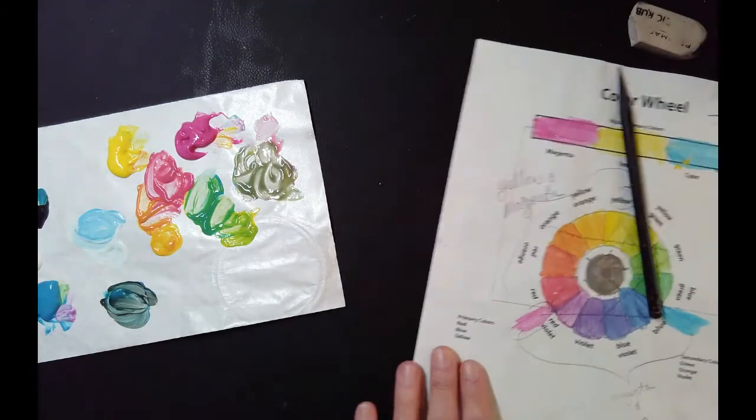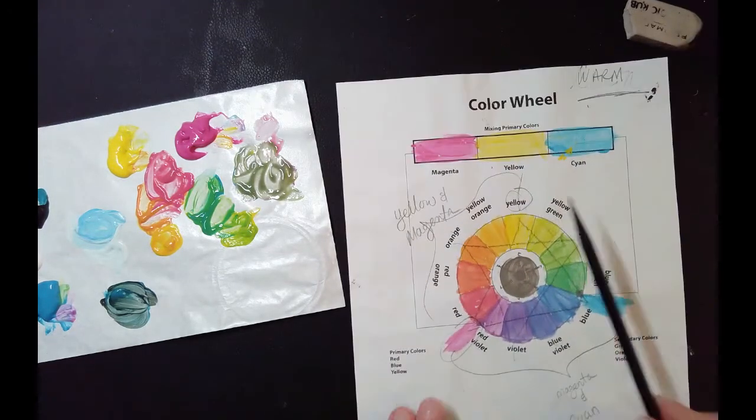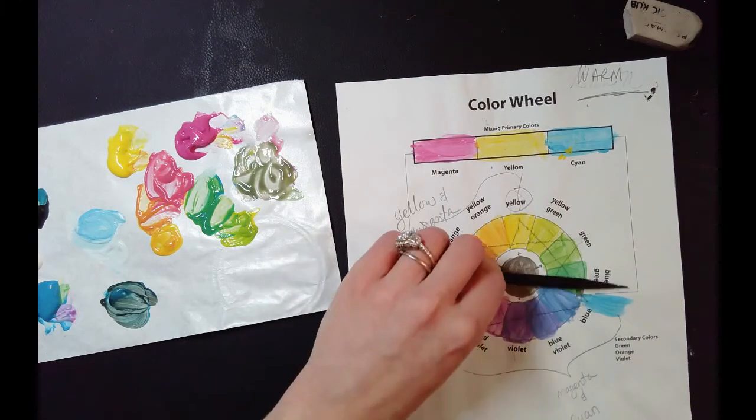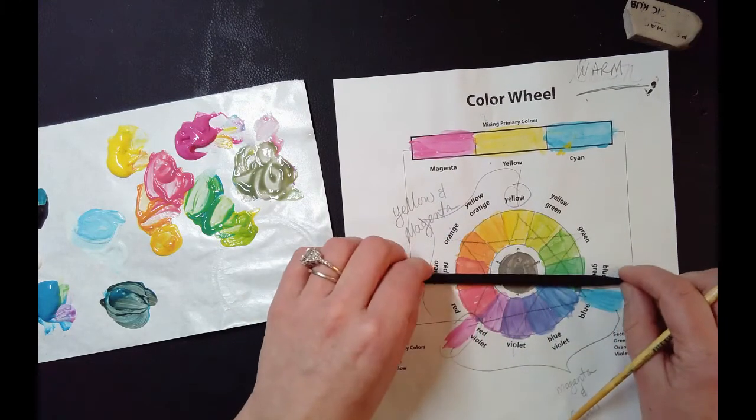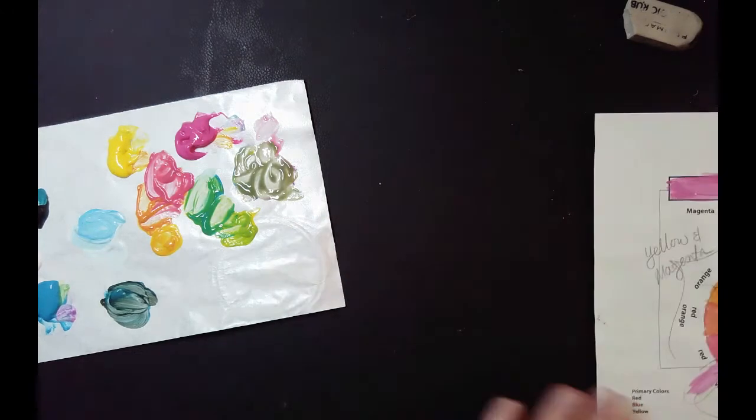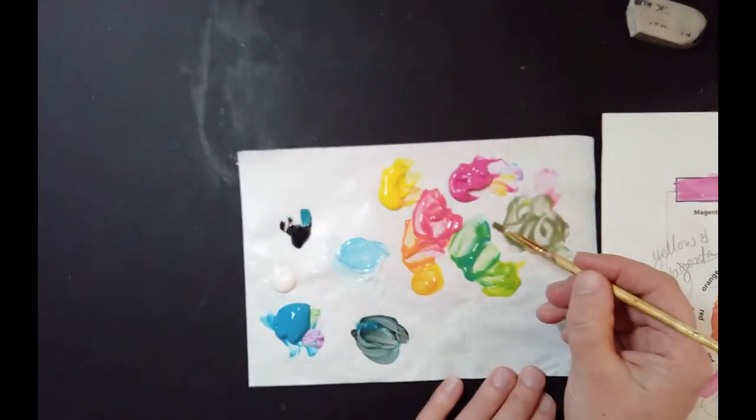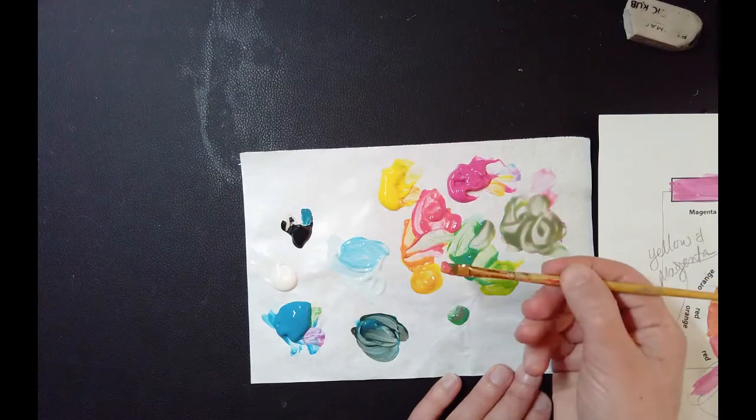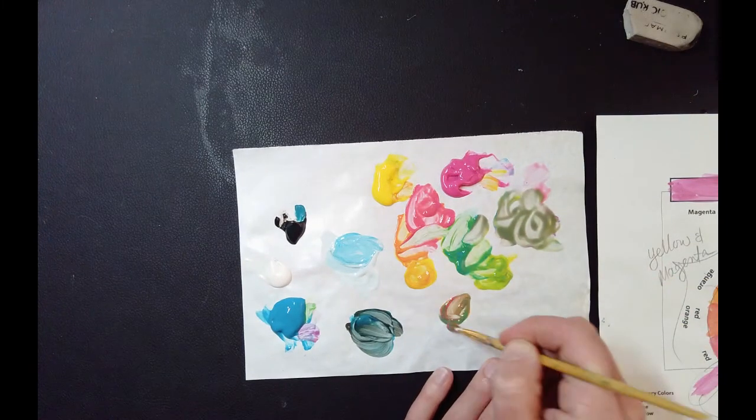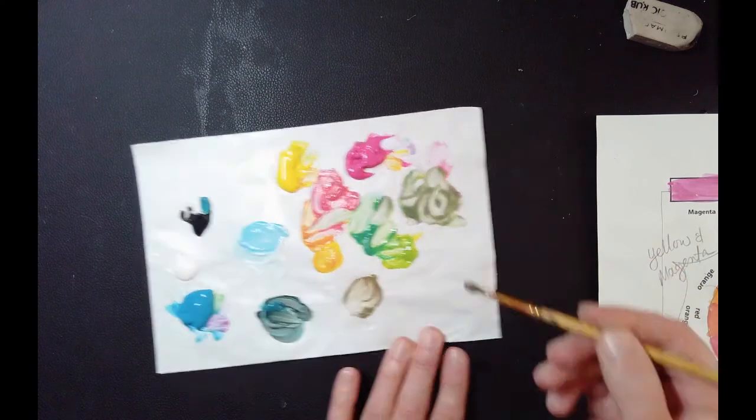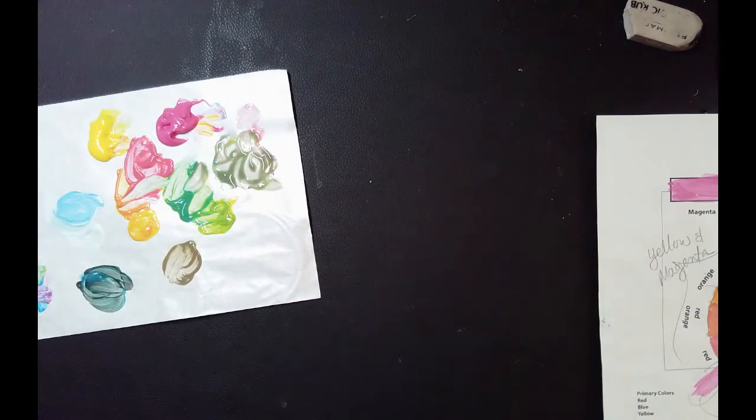Then I can do the same thing again. What do my magenta and yellow make? They make the oranges and reds. So now I can add in some green. So I can literally just pick up a little bit of green, a little bit of magenta or orange, and it's another neutral. It's similar to that one, but slightly different.